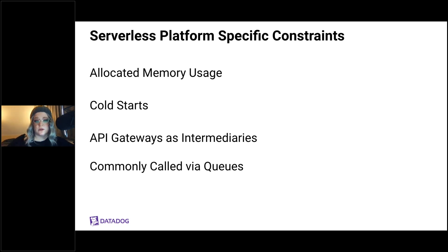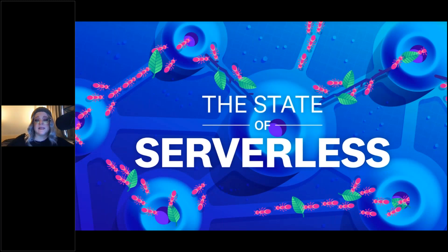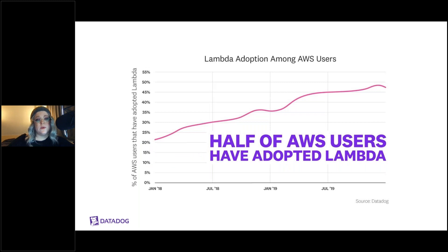Every year, Datadog publishes a State of Serverless report where we dive into the data to see what kind of usage we're seeing with our customers. We found that half of AWS users have adopted Lambda, which tells us there's no doubt there are use cases and business value for using serverless.